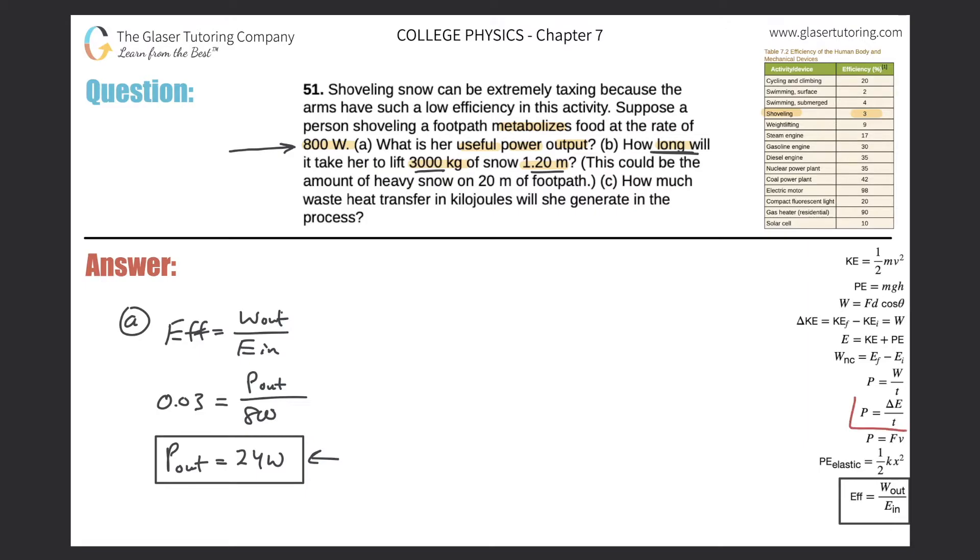So maybe just maybe we're going to use this particular formula over here on the right-hand side. For letter B, power is equal to the change in energy of a certain object divided by the time it took for that object's energy to change. So she is outputting a value of power equal to 24 watts.